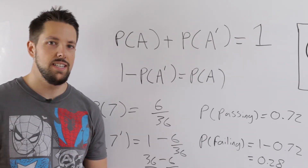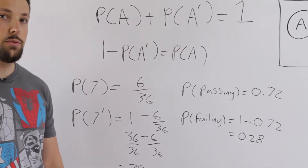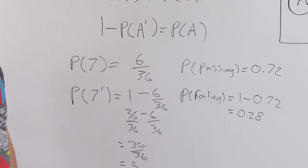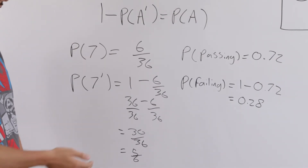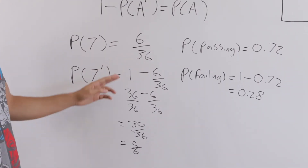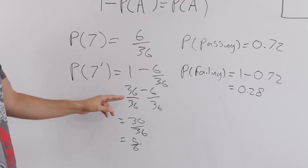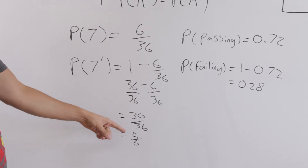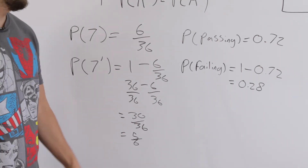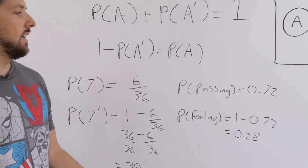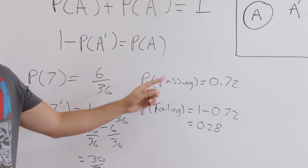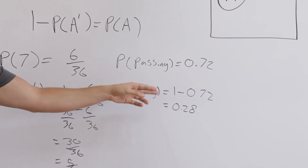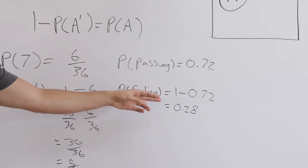Let's do a couple of quick examples. From the sample space of two dice, the probability of rolling a seven is six over 36. So the probability of not rolling a seven is one minus six over 36. We turn one into 36 over 36, and the answer is 30 over 36, or five over six. If the probability of passing a test is 72% or 0.72, then the probability of failing is 1 minus 0.72, which equals 0.28.